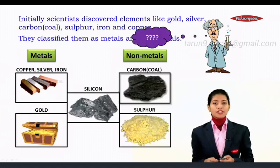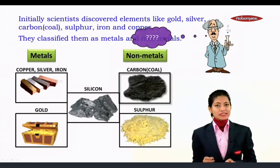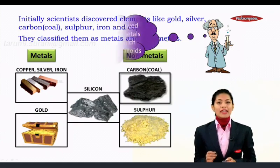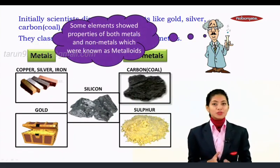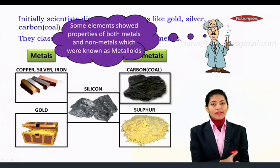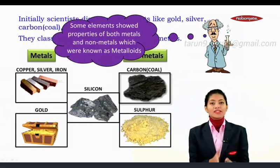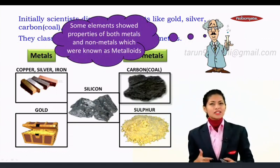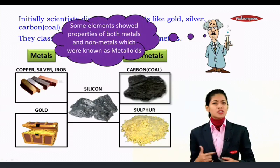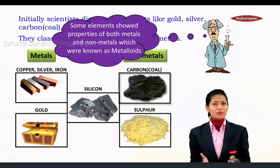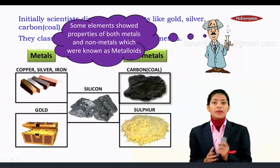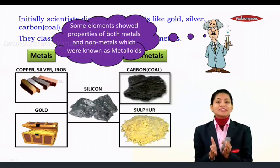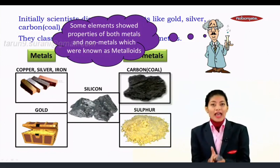But what about elements like silicon? Silicon and some other elements showed the properties of both metals as well as non-metals, and they were known as metalloids. This brings us to the conclusion that not all elements are metal or non-metal — some elements can be metalloids as well.